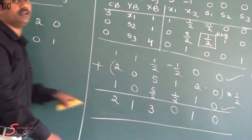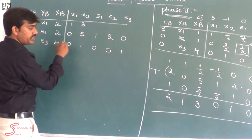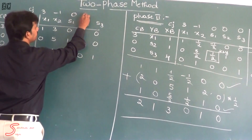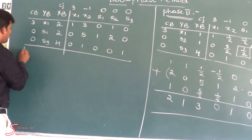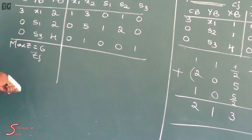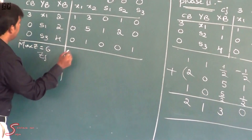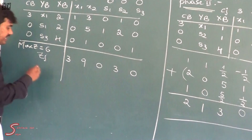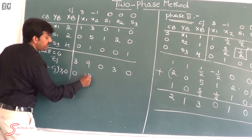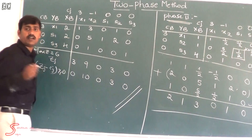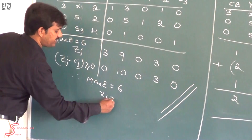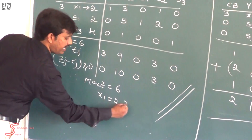Now applying the optimality check: maximum z equals summation of cB times xB, which is 3 into 2 giving 6. The zj values: 3 into 1 is 3, 3 into 3 gives 9, and others are 0 or 3. Computing zj minus cj: 3 minus 3 is 0, 9 minus minus 1 is 10, 0 minus 3 and others. All values of zj minus cj are greater than or equal to 0, so the optimality condition is satisfied. Therefore, maximum z equals 6, with x1 equal to 2 and x2 equal to 0.